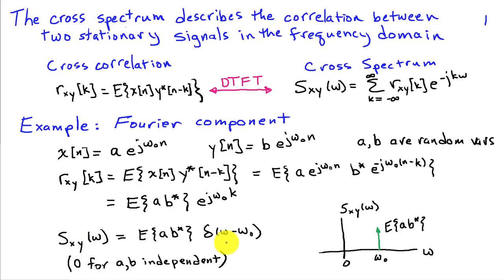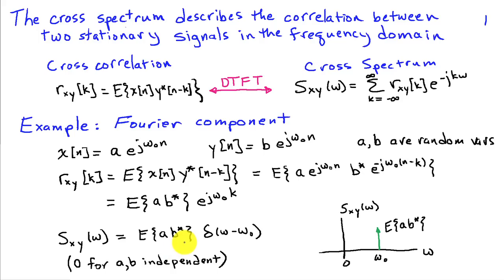We see that the correlation between the Fourier coefficients a and b determines what the cross spectrum is. So if a and b are independent or uncorrelated — in other words, variations in a don't correspond to variations in b — we're averaging over many random experiments where we draw a value of a and then a value of b, represented by the expectation. If these two are uncorrelated or independent, this is going to be zero. If they're perfectly dependent, it'll be some non-zero value. When we look at the cross spectrum, we're looking at the relationship between the Fourier coefficients associated with that frequency.